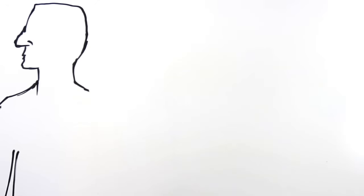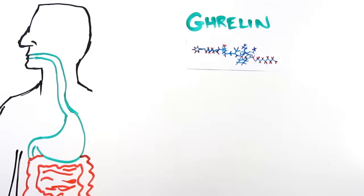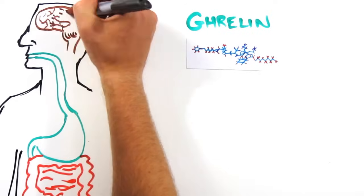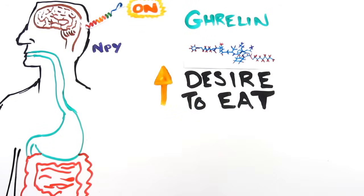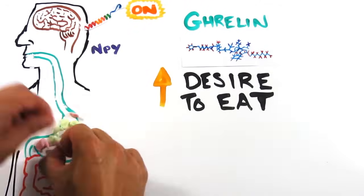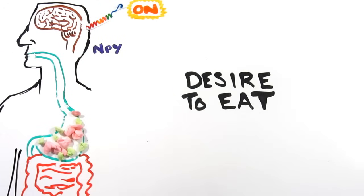When your stomach is empty, it releases a hormone called ghrelin. Ghrelin interacts in the brain with the neurotransmitter NPY and turns on the desire to eat. Once you've satisfied this desire by eating, ghrelin levels drop back down and hunger subsides.